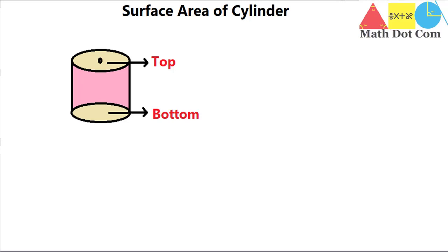Why? Because a cylinder is a three-dimensional object. And for finding the area of a three-dimensional object, we consider the surface area of that object.